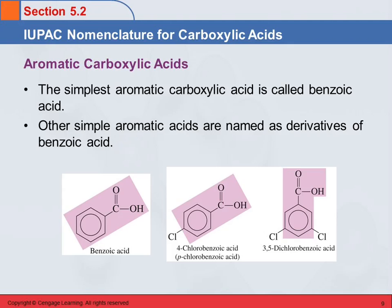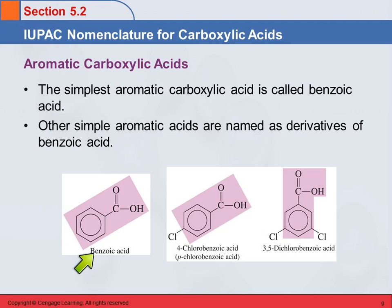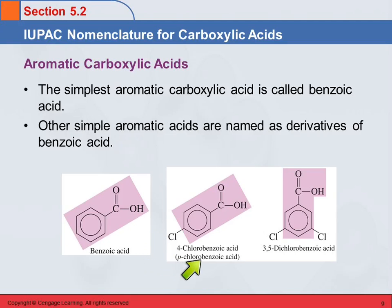We can also have aromatic carboxylic acids. The simplest one is called benzoic acid — it's a benzene ring with a carboxyl group. We take benzene and it becomes benzoic acid. These can have substituents on them, named the same way as before. For example, this is 4-chlorobenzoic acid, or para-chlorobenzoic acid, because the carbon with the carboxyl group is always number 1. And this would be 3,5-dichlorobenzoic acid.